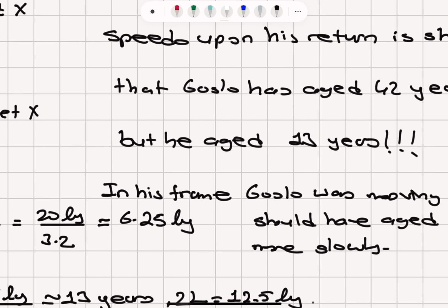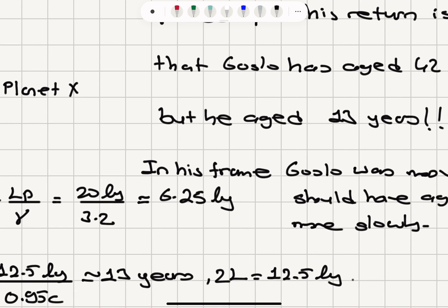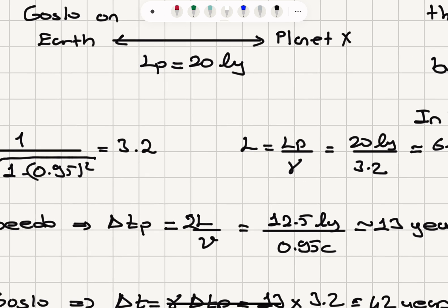In the reference frame of Speedo, Goslo was moving and should have aged according to Speedo more slowly. So we have a problem here according to this observation by Speedo.